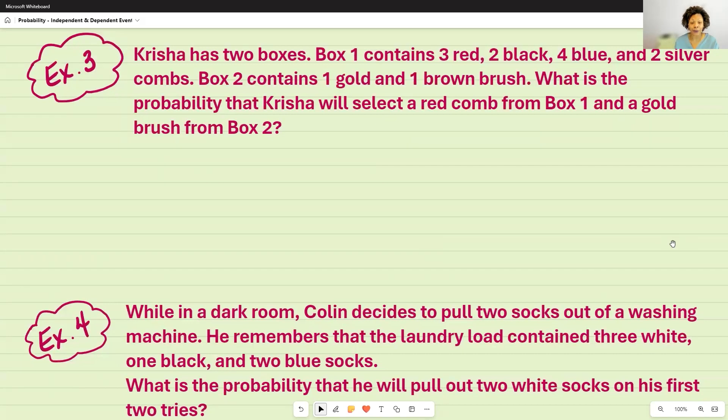So what I would suggest that you do is go ahead and count up the total of box one. So three plus two plus four plus two, that is going to give us a total of 11 combs. So out of the first box, what's your probability of selecting a red comb? So out of 11, red is three. And then, and tells me I'm multiplying.